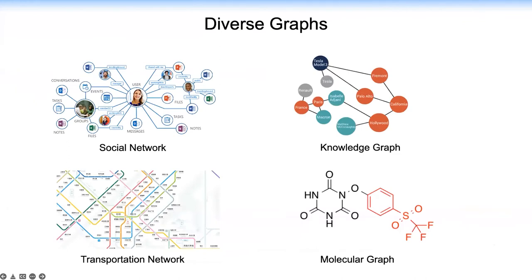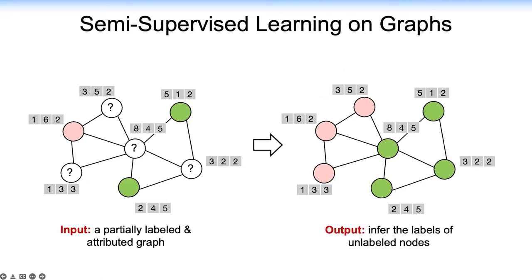Graph is a common language to represent the relations between different objects. There are many types of graph data in the real world, such as social network, knowledge graph, transportation network, and molecular graph. In this work, we focus on the problem of semi-supervised learning on graphs. The input of this task is an attributed graph which has a few labeled nodes. Our goal is to infer the missing labels based on graph structure, node attributes, and observed labels.